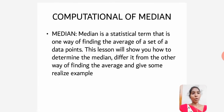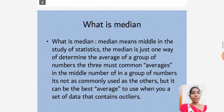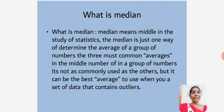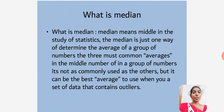Now I would like to discuss about median. The median is a statistical term that is one way of finding the average of a set of data points. Median means the middle value in the study of statistics. It is just one way of determining the average of a group of numbers, representing the middle number in a group. It can be the best average to use when there is a skewed set of data.